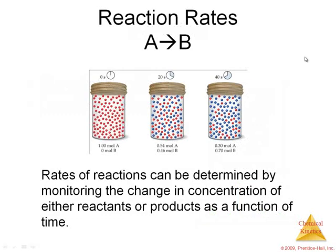Let's say I have a reaction where reactant A is being transformed into product B. I can put the reactants together — start with all A — and monitor over time what happens to the concentration of each reactant and product. Over time, my amount of A goes down as my amount of B, which starts at zero, goes up. If I wanted to know the rate of this reaction, I can follow what's happening with A or with B.